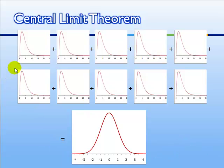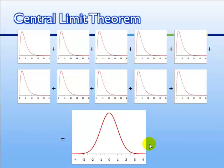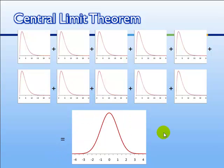Graphically, we can take a bunch of variables — in this case 10 variables — they're all identically distributed, with the same probability density function. If we add them together, what we get is a normal distribution. Now here I only have 10 variables, which is not nearly close to infinity, but you get the point that as we start adding variables together, the sum becomes normally distributed.